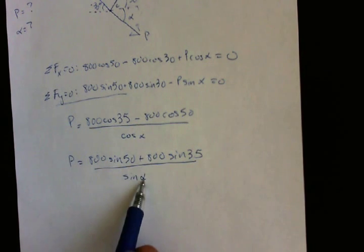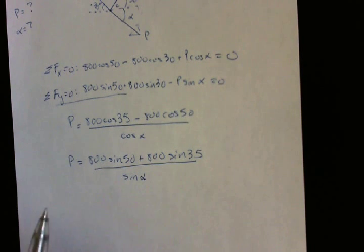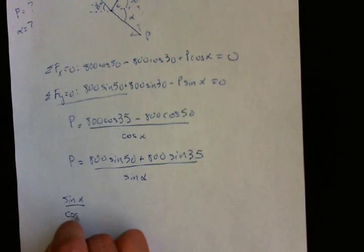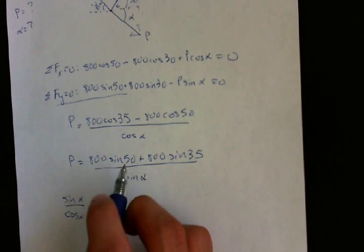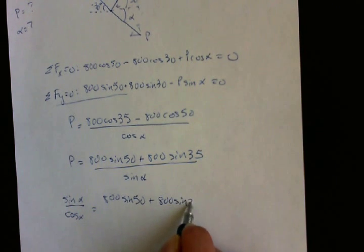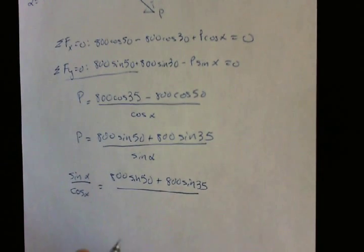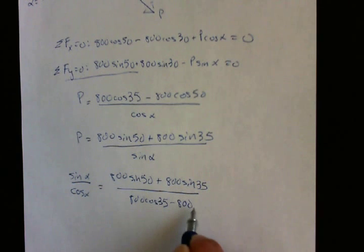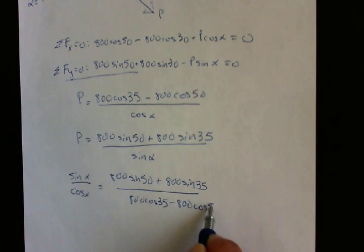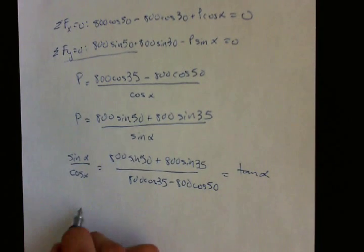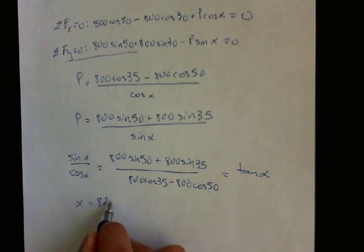And so to solve for alpha, you would set these two equations equal to each other. If you do that, you will get sine alpha over cosine alpha equals 800 sine 50 plus 800 sine 35 over 800 cosine 35 minus 800 cosine 50 equals tangent. Therefore alpha equals 82.5 degrees.